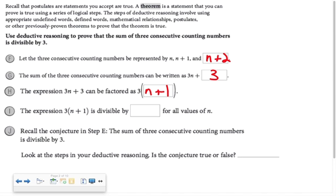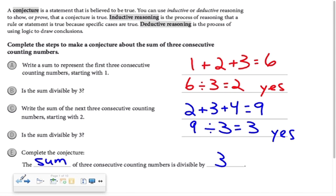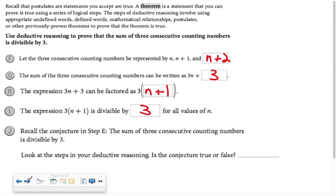And the expression 3n plus 3 that I arrived at can be factored as 3 times n plus 1. And since the expression 3 times n plus 1 is divisible by 3 for all values of n. Is the conjecture true or false? Is my conjecture that sum of three consecutive counting numbers is divisible by 3 true? And yes it is. I've just proven it using deductive reasoning.